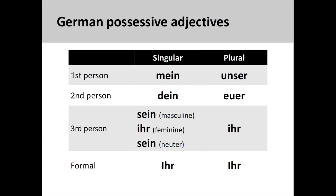Possessive adjectives in German are organized by person, case, gender, and number. The adjective roots always stay the same and refer to the person who possesses the object. The endings you put on these roots, however, change to indicate the case, gender, and number of the noun that follows.